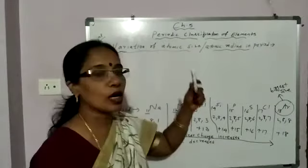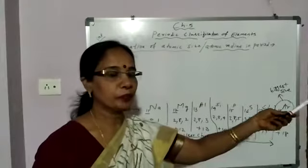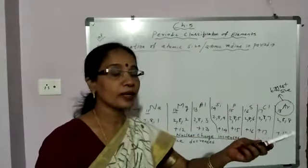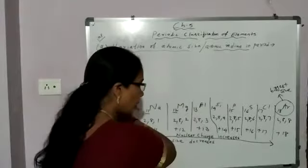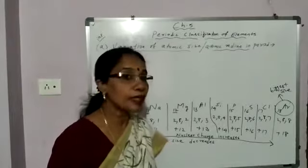Yes students, just now we discussed about the variation of atomic size in period. Period means what are periods? The horizontal rows in periodic table. That is called period.